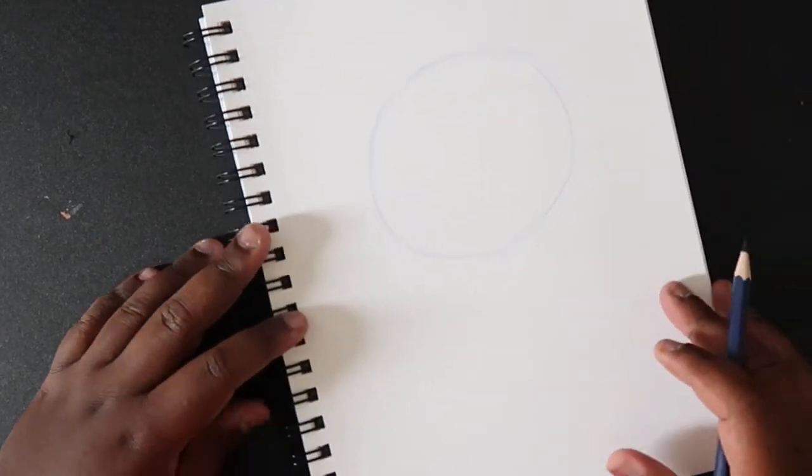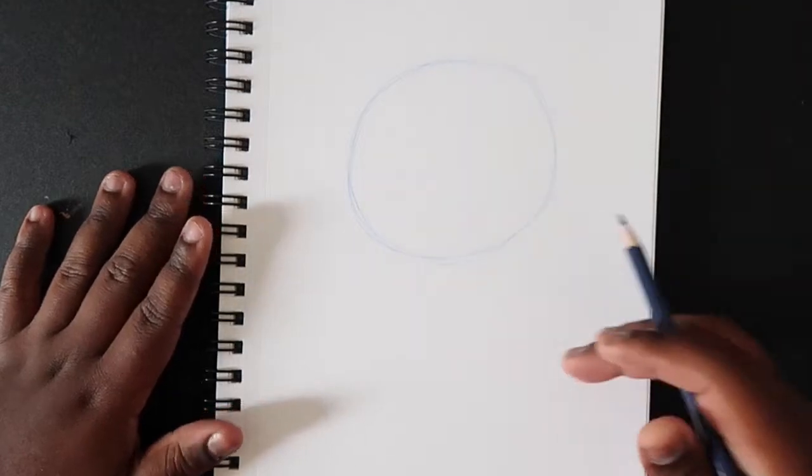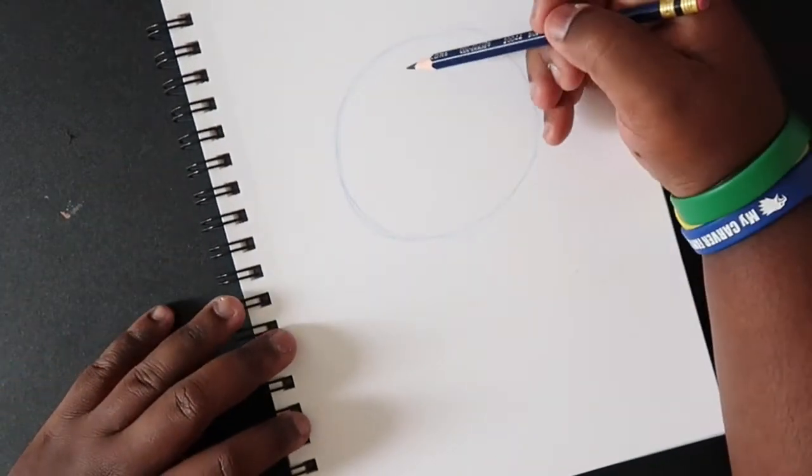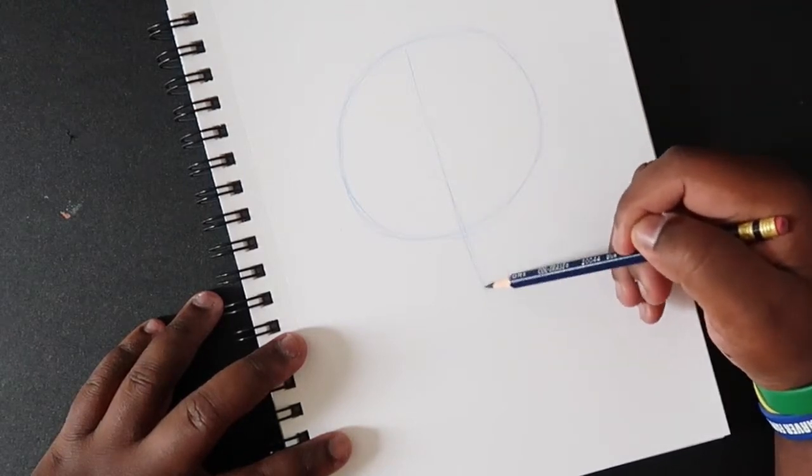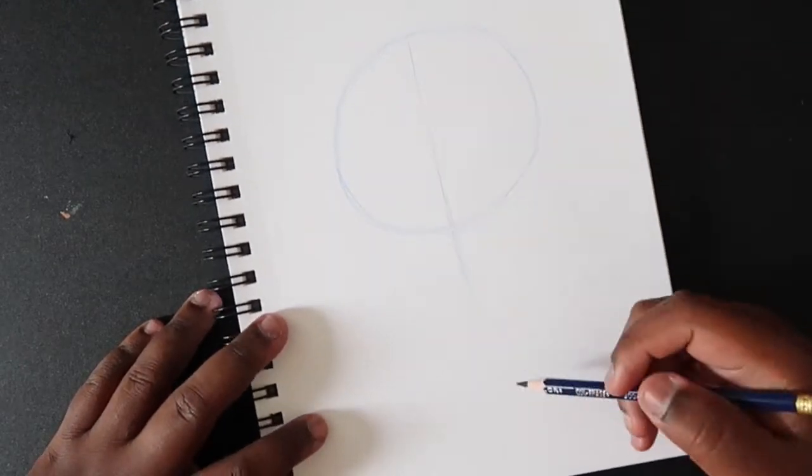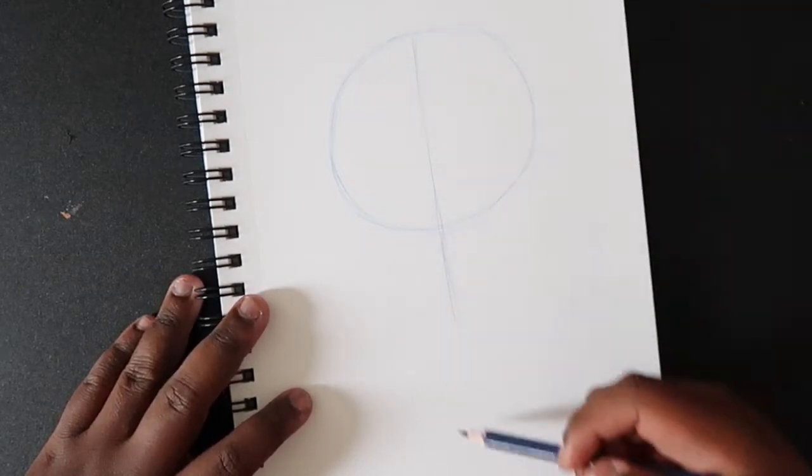Usually when I draw faces I like to make the face shape almost the same size as this original circle, but instead we're going to make something a little bit smaller. So I'm just going to draw a front view. Instead of making the line very long, just gonna make it a little bit shorter.